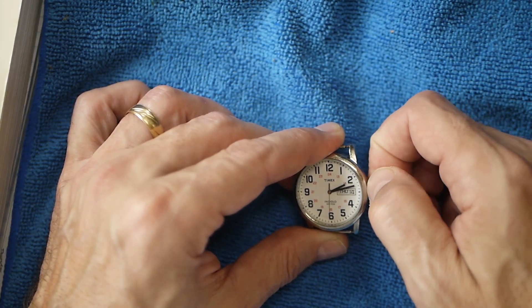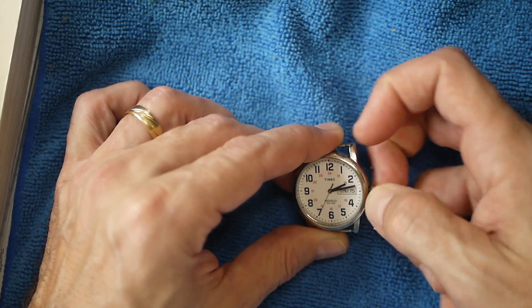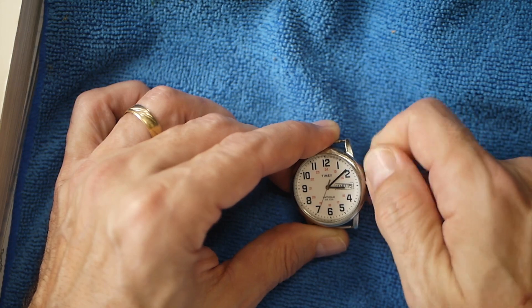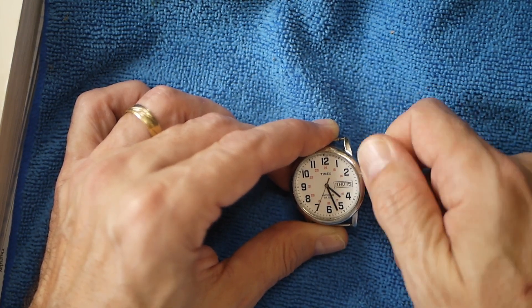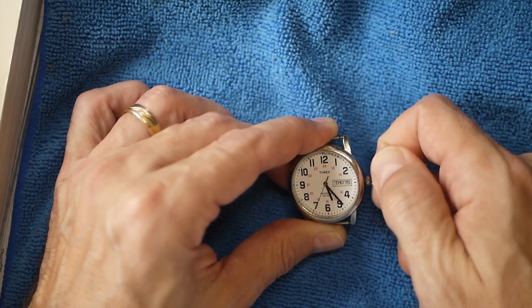We're going to set it to the 15th and then we pull it out one more position and we spin this to get past midnight so we know where our AM and PM is on a date function watch. That's probably the most important to do here.